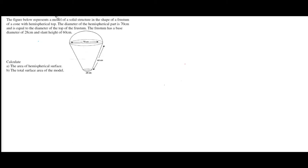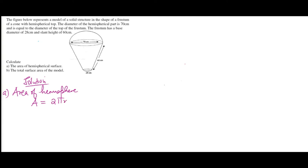Let's begin with the first part — the area of the hemispherical top. To obtain the area of the hemisphere, we use the formula: area = 2πr². This is the formula for calculating the area of a hemisphere.